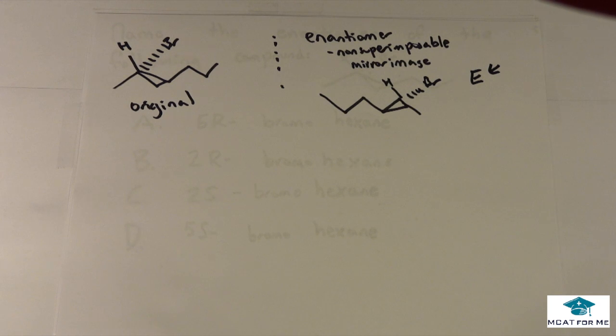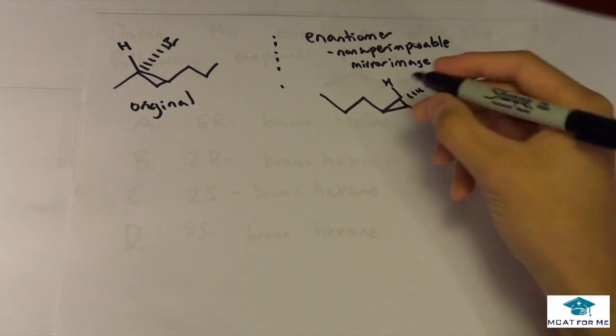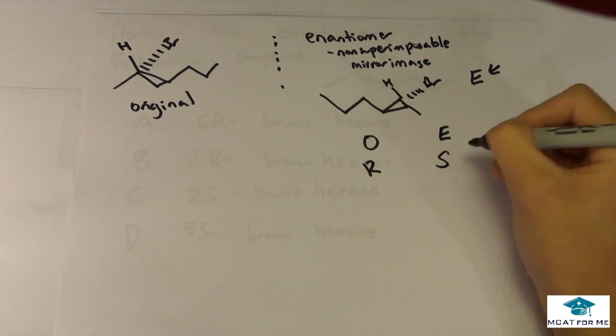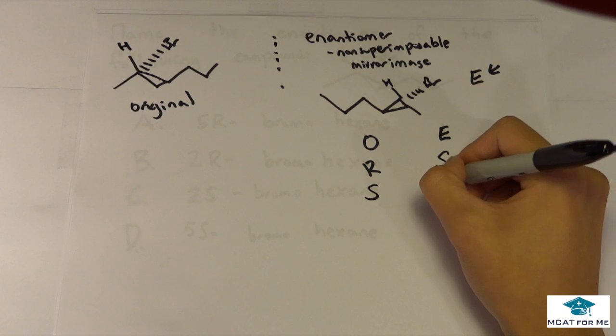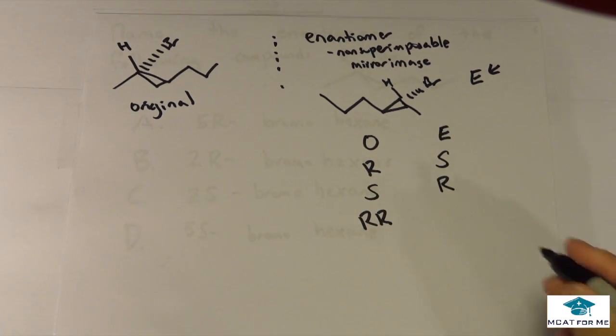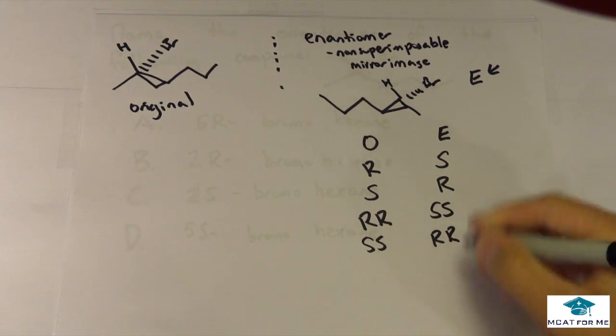Remember, the only thing that differs between the original and the enantiomer is the stereochemistry. For example, if the original was R, the enantiomer will be S. If the original was S, the enantiomer will be R. Similarly, if we had R,R with two stereocenters, it would be S,S. You can get the picture from there.